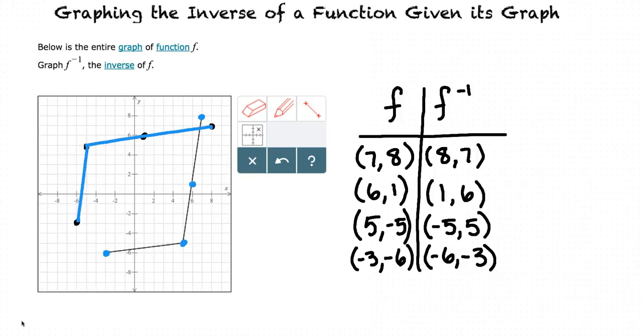So, it seems like in order to graph the inverse of a function, given its graph, we first need to look at some points of the original function, and then use those points along with the definition of inverse to find some points of the inverse function. After doing this, we can plot the inverse on the coordinate plane. Am I missing anything?